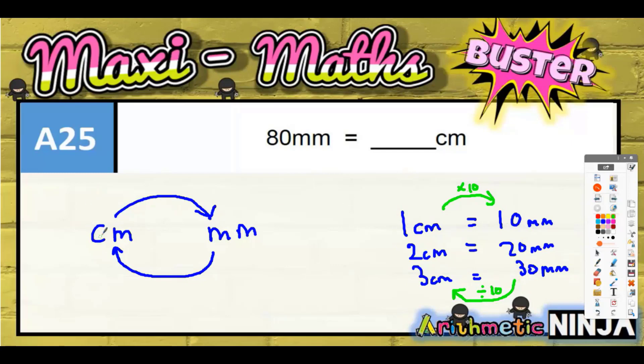And then you can kind of transfer that over here. So centimeters into millimeters is times 10, millimeters back into centimeters is dividing by 10.